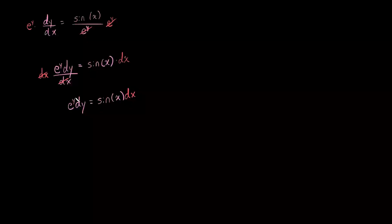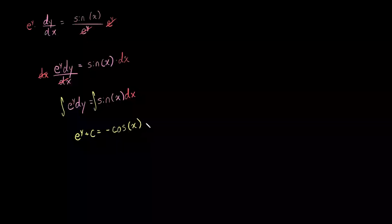So what we're going to do is integrate both sides. The integral of e to the y dy is just e to the y. The integral of sine of x is negative cosine of x. From there, we can combine our constants, so we're left with e to the y is equal to negative cosine of x plus c.